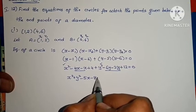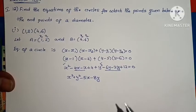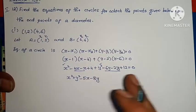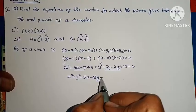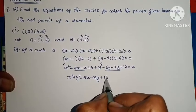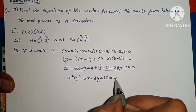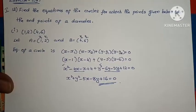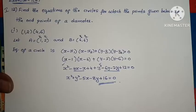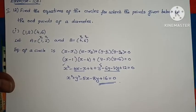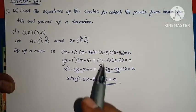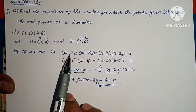Expanding gives minus 8y, constant term is 12 plus 4 equals 16, so plus 16 equals 0. The problem is complete. This is very simple — just one formula. When you have extremities or endpoints of a diameter, apply x minus x1 into x minus x2 plus y minus y1 into y minus y2 equals 0.